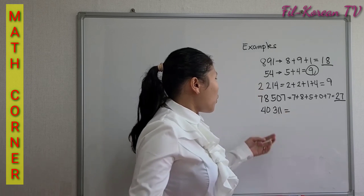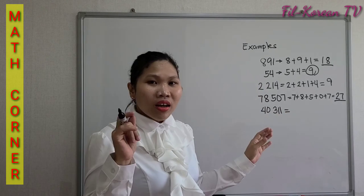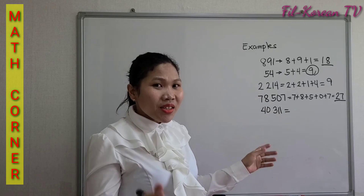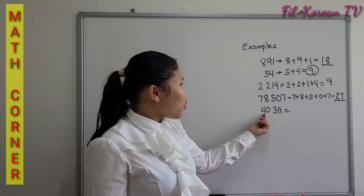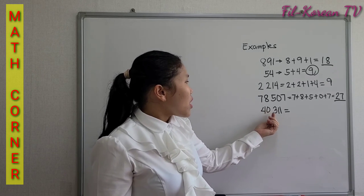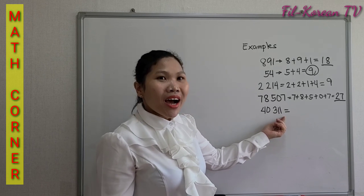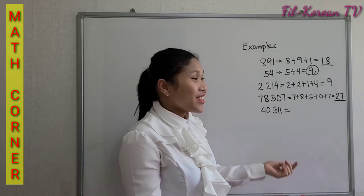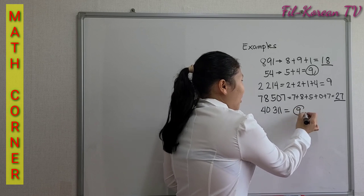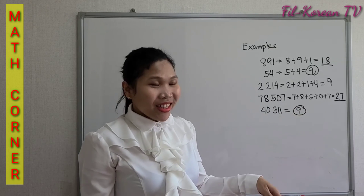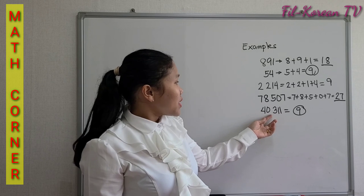40,311. Add the digits: 4 plus 0 plus 3 plus 1 plus 1, the answer is 9. 9 is a multiple of 9, so 40,311 is divisible by 9.